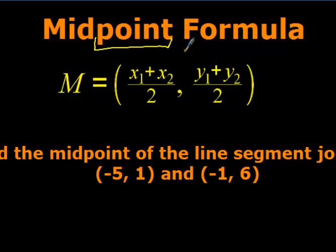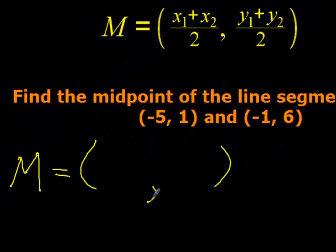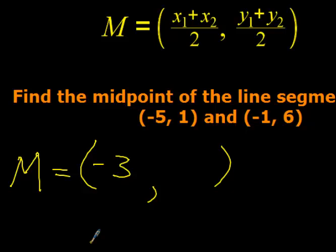Notice what letter we use for midpoint — M. Be careful: where else do we use M? Slope, right? But little m means slope, and big M means midpoint. Make sure I can see it's a capital M. So if I ask you to find the midpoint: negative 5 plus negative 1 is negative 6, divided by 2 is negative 3. Then 1 plus 6 is 7, divided by 2 stays as 7 over 2 since it doesn't reduce. That's your midpoint.